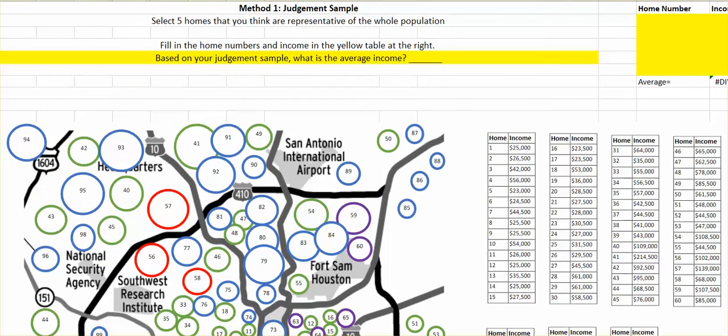The first one you'll do on your own is just a judgment sample. Imagine that you're picking five homes that you think represent the whole population. You're going to pick those homes, write down the home number, find the income, and calculate the average. Not very scientific, is it?